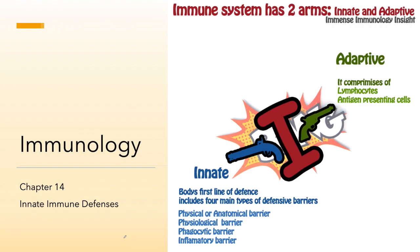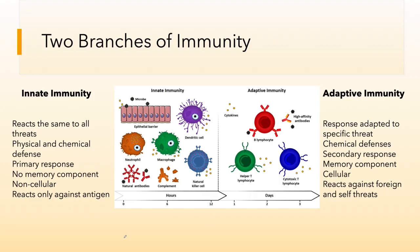The immune system has two basic branches: the innate immune system and the adaptive immune system. They work together and in conjunction; however, we will learn about them in two very linear manners and two separate ways.